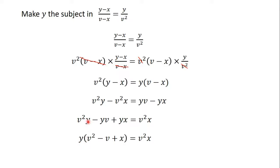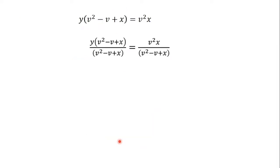So: y — if you take y out, this term becomes v squared, this becomes minus v, and this becomes minus x. Wait — that gives us y into bracket (v squared minus v plus x) is equal to v squared x. As we have been doing all along, when you get to this stage, you divide both sides by the term in the bracket attached to y, which is (v squared minus v plus x). That gives us y times (v squared minus v plus x) divided by (v squared minus v plus x) equals v squared x divided by (v squared minus v plus x). The bracket terms cancel, so y equals v squared x over (v squared minus v plus x).